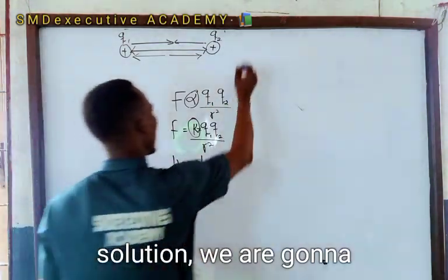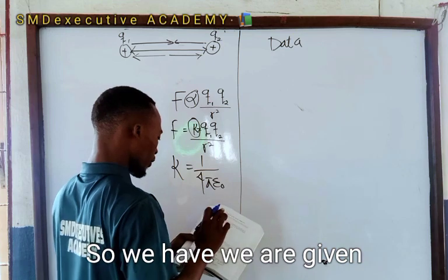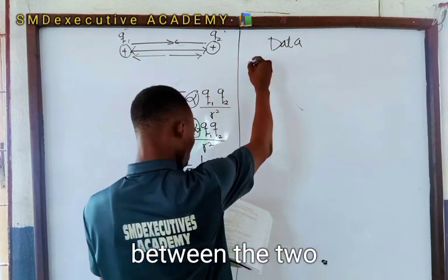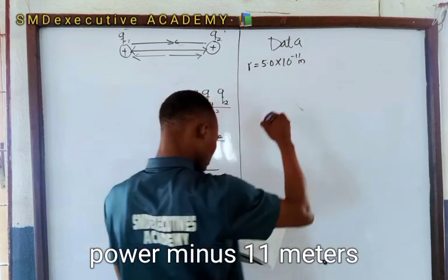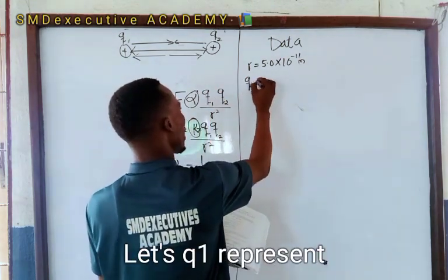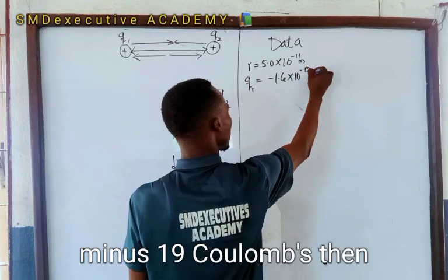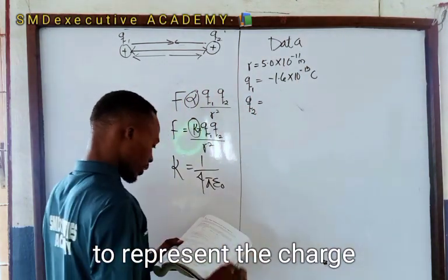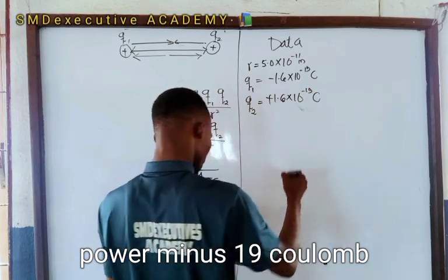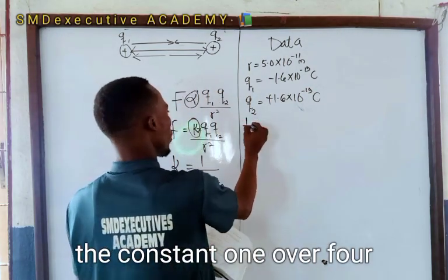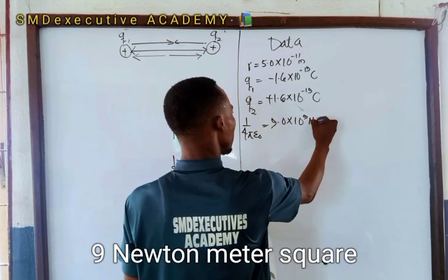To be quick with the solution, we write out the data. The distance between the two particles: r equals 5.0 times 10 raised to power minus 11 meters. Q1, representing the charge of the electron: minus 1.6 times 10 raised to power minus 19 coulombs. Q2, representing the charge of the proton: plus 1.6 times 10 raised to power minus 19 coulombs. The constant 1 over 4π epsilon naught equals 9.0 times 10 raised to power 9 newton meter squared per coulomb squared.